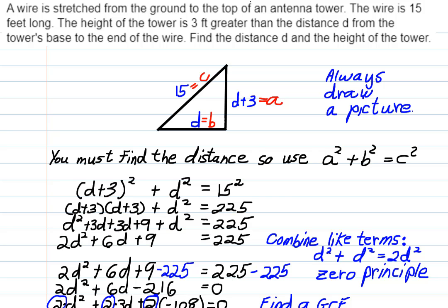Okay, let's talk about a right triangle. A wire is stretched from the ground to the top of an antenna tower. The wire is 15 feet long. The height of the tower is three feet longer than the distance d from the tower's base to the end of the wire.